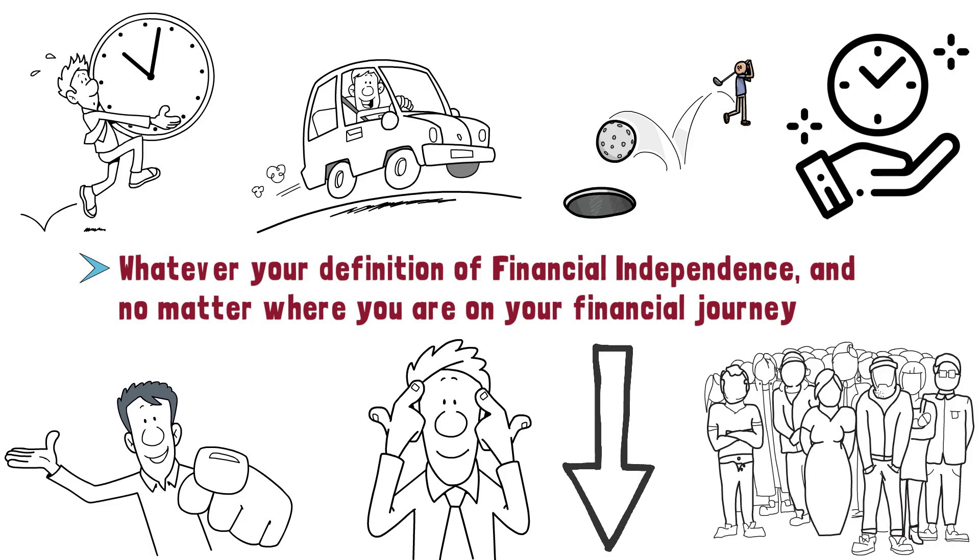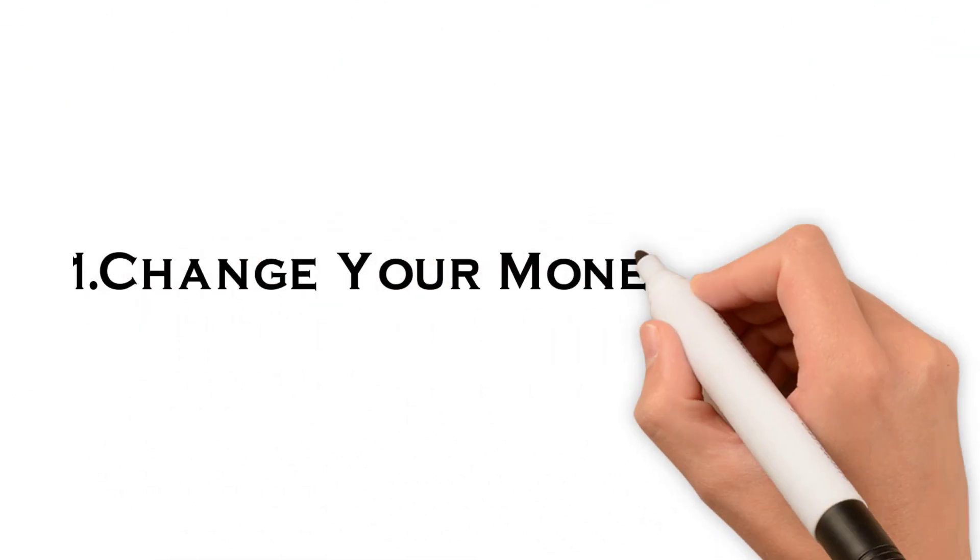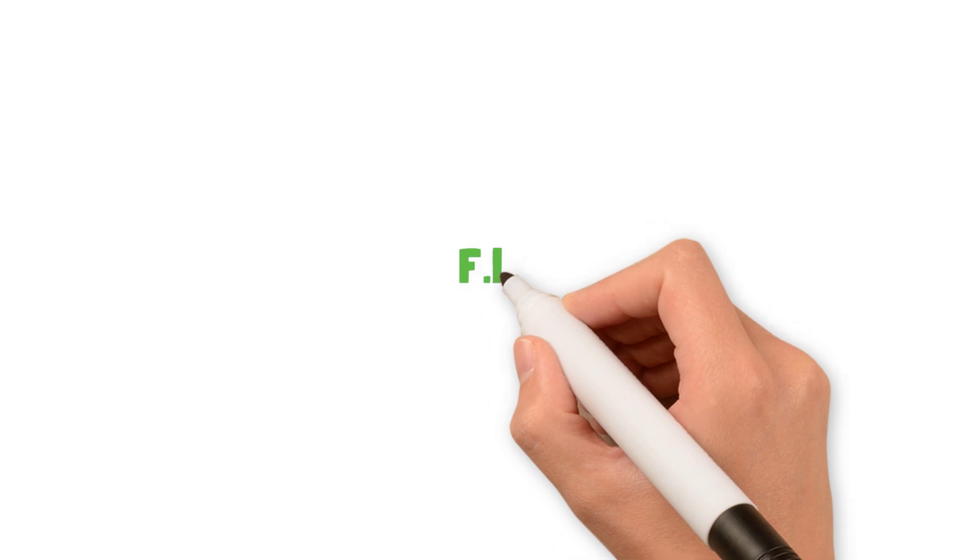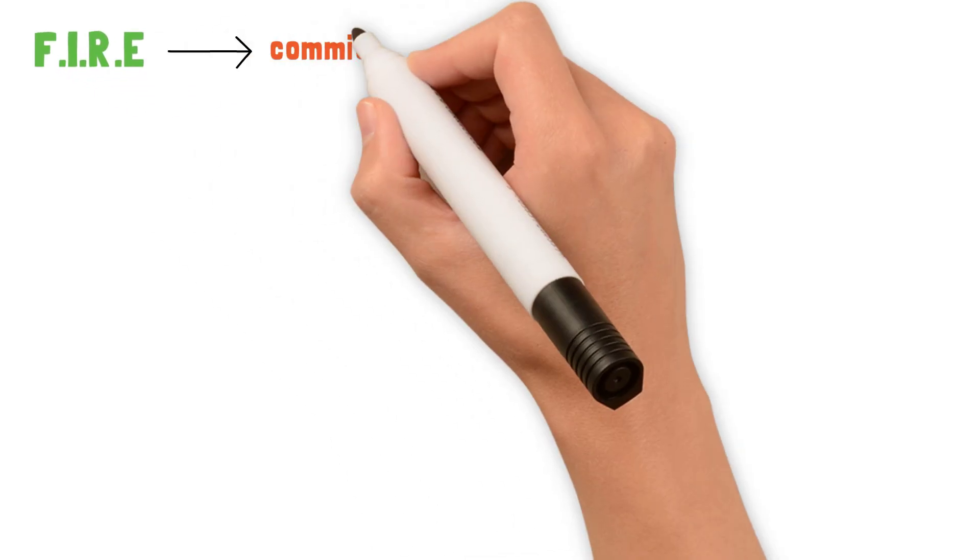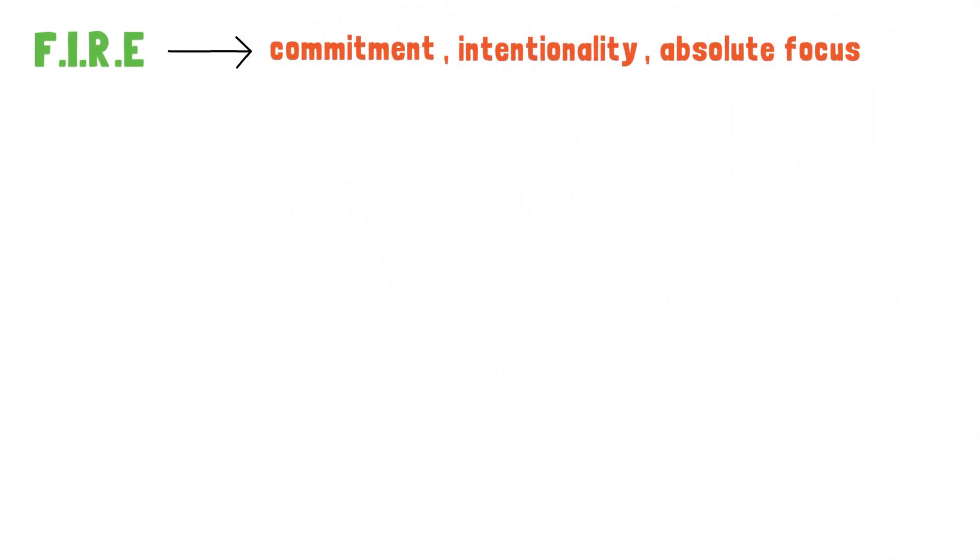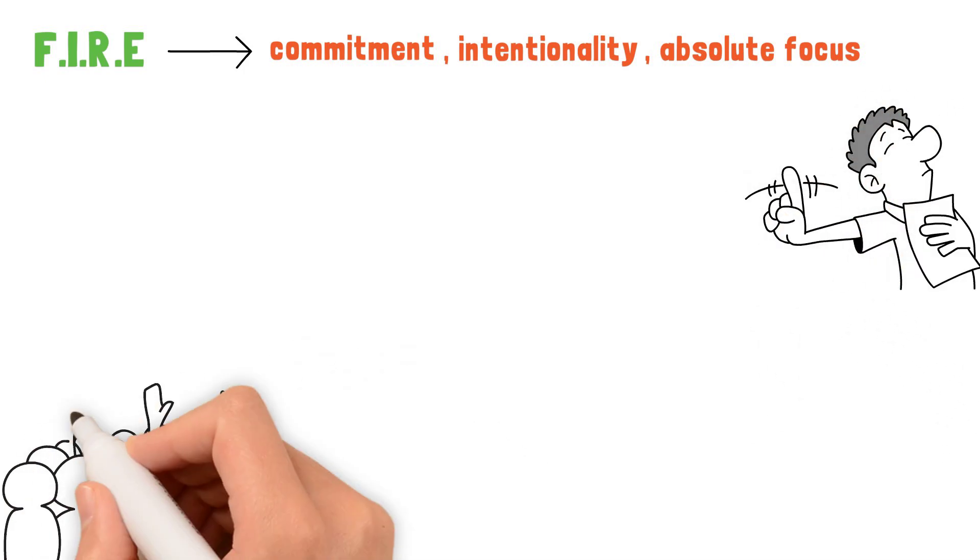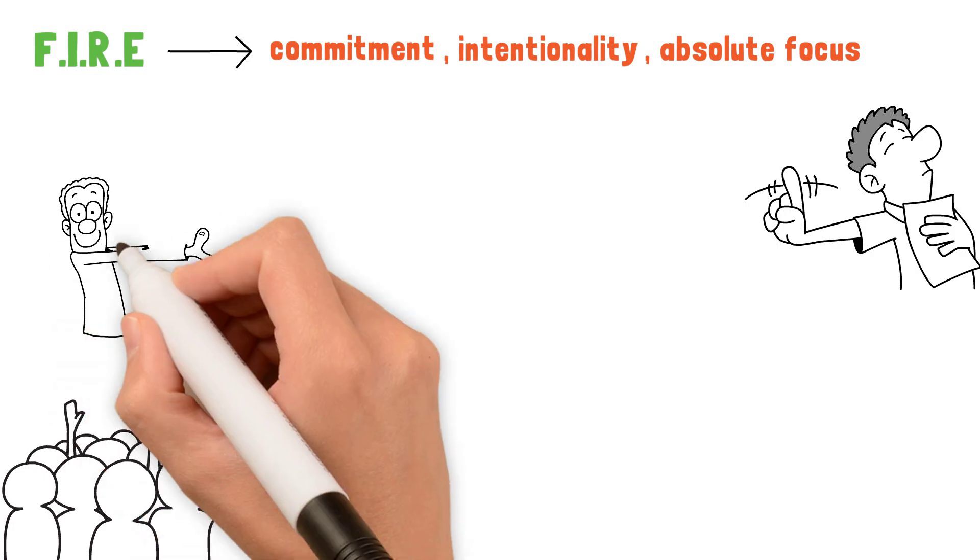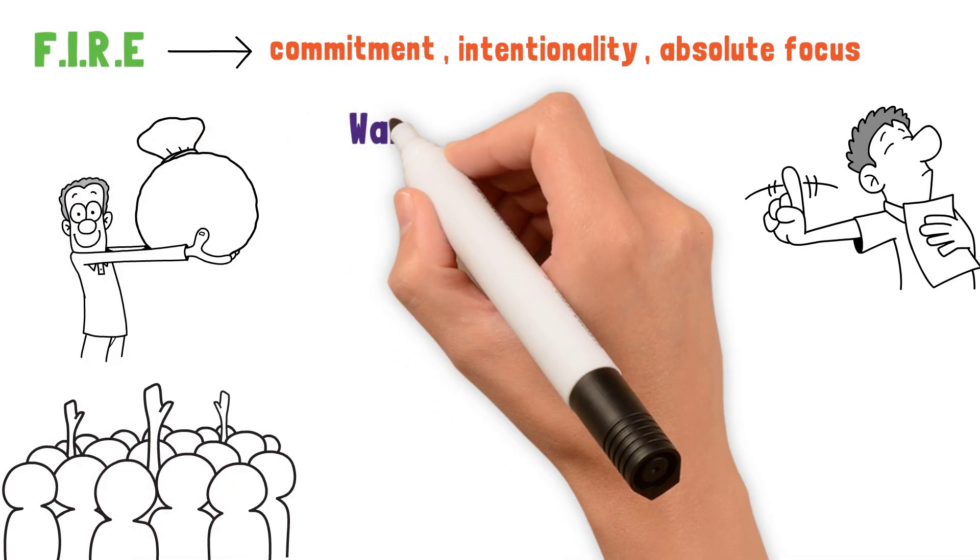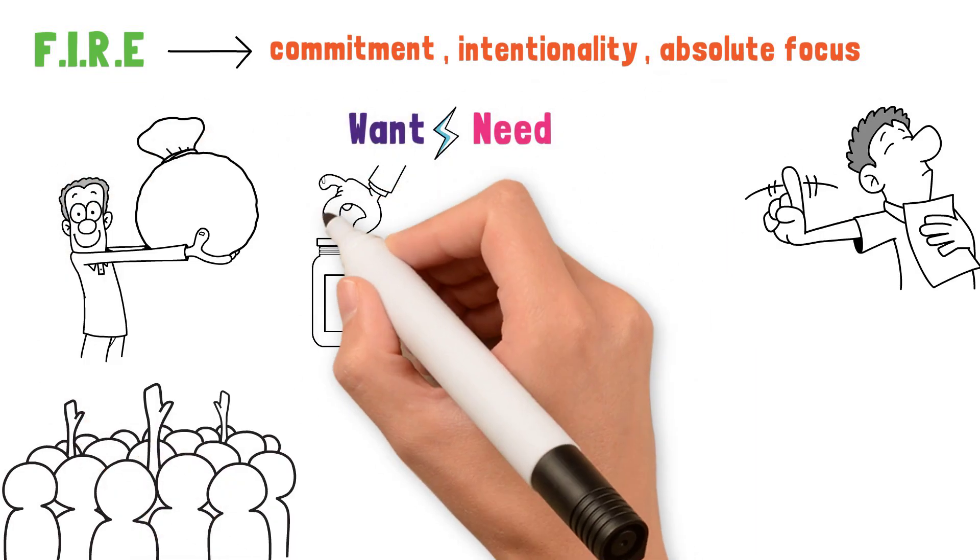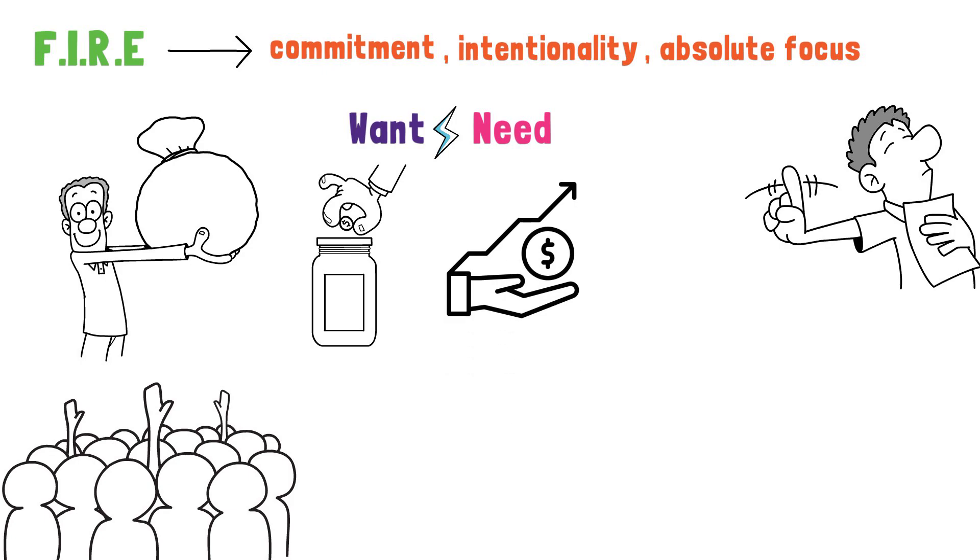Here are five habits you must begin to sharpen. One, change your money mindset. To pursue something like FIRE requires commitment, intentionality, and absolute focus. It's not easy. If it were, many people would be retiring early. It'll require a change in how you relate to money, what you consider a want versus a need, and a devotion to saving and investing that many may find obsessive, almost uncomfortable.